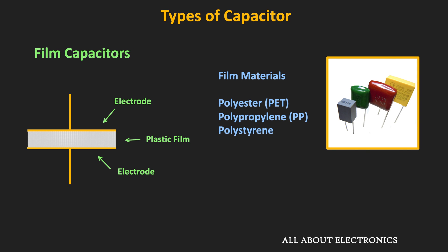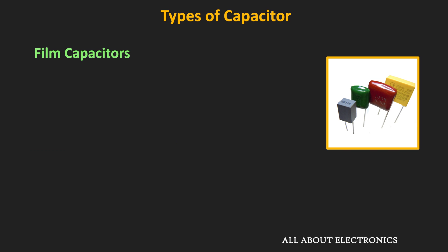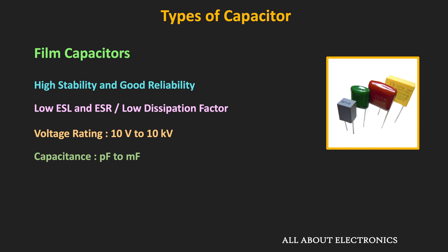The next very popular type of capacitor is the film capacitor. In a film capacitor, plastic film is used as the dielectric material. Depending on the material, there are different types: polypropylene, polyester, and polystyrene. Film capacitors are used in applications where good reliability and stability are required. In general, film capacitors have lower ESL and a low dissipation factor. They are available in the range of picofarads to millifarads, with voltage ratings from 10V to 10kV.